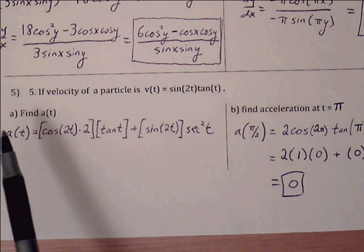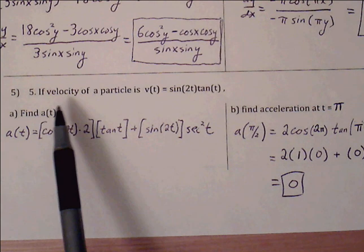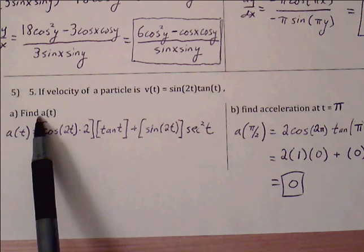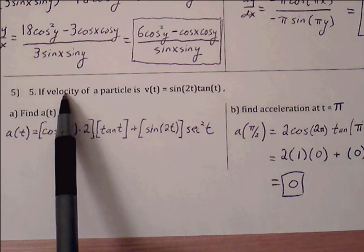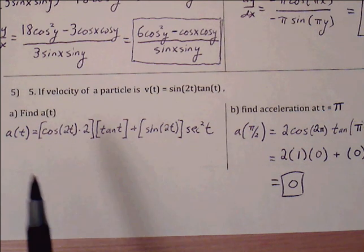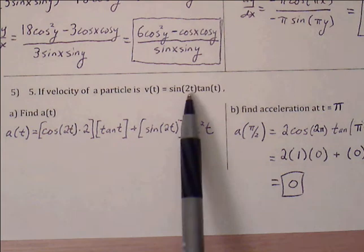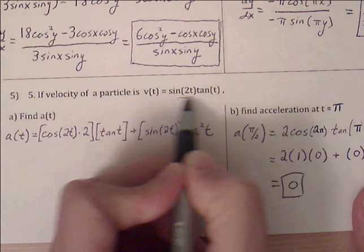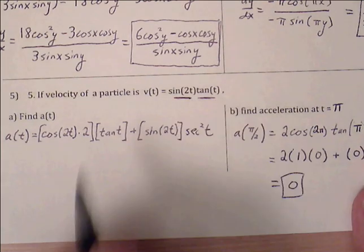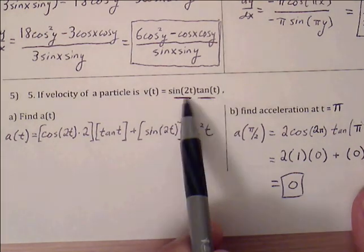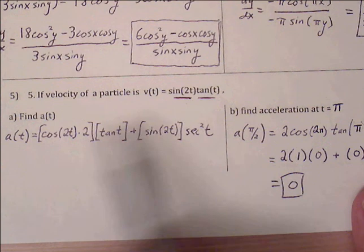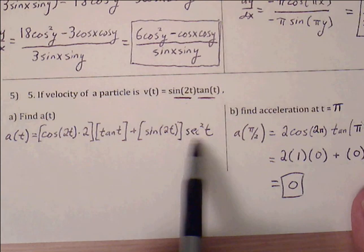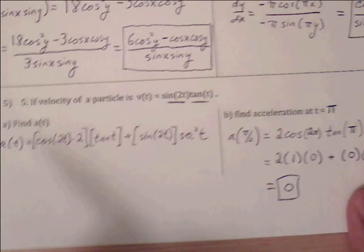Number five is a position-velocity-acceleration problem. If velocity v(t) equals sine(2t) times tangent(t), find a(t). Since we're at the velocity function, we go one derivative further to get acceleration. We need to use the product rule: f prime g plus f g prime. The derivative of sine(2t) becomes cosine(2t) times 2, and the derivative of tangent(t) becomes secant squared(t).